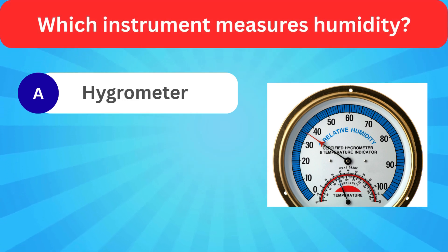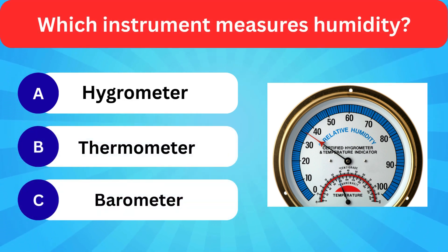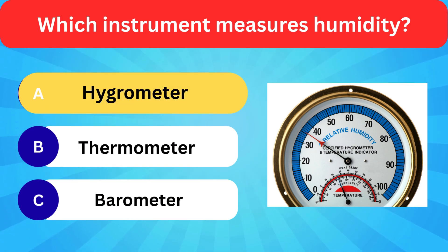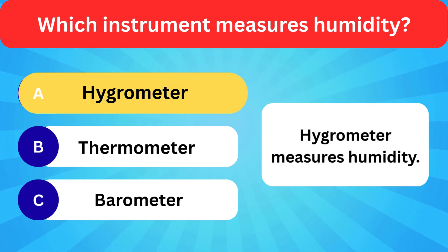Which instrument measures humidity? Options: Hygrometer, Thermometer, Barometer. Correct answer is hygrometer. Hygrometer measures humidity.